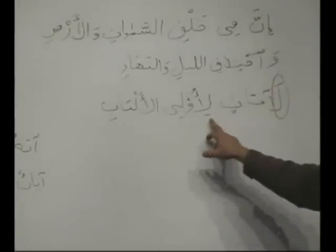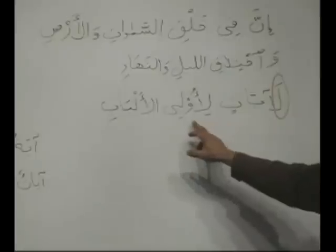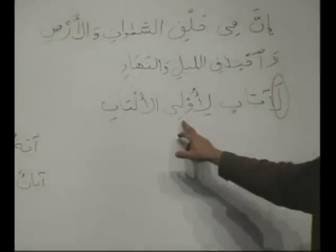And what is this? Li — uli — al-albab. Ism majroor, wa huwa mudaf, and mudaf ilahi. We will go into more detail later. But the translation is: this is jama, this is jama — they are all jama, they are not singulars. It means the people of intelligence.